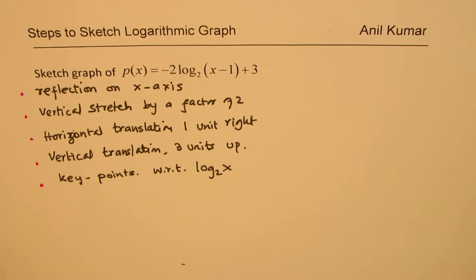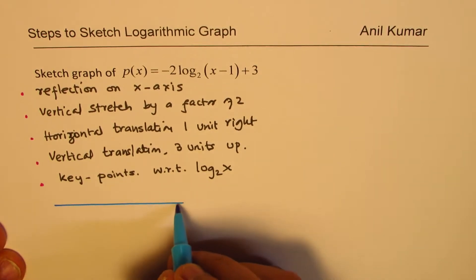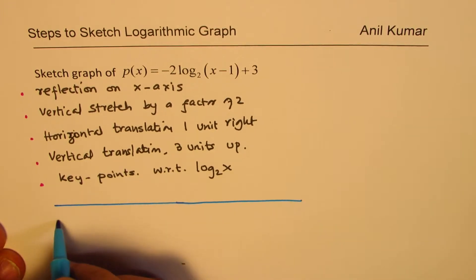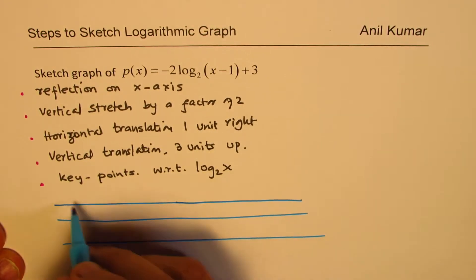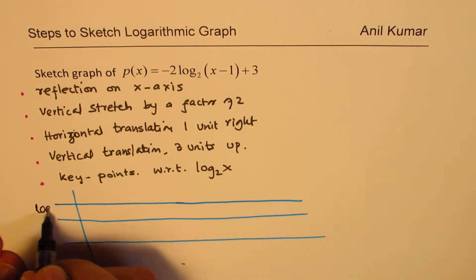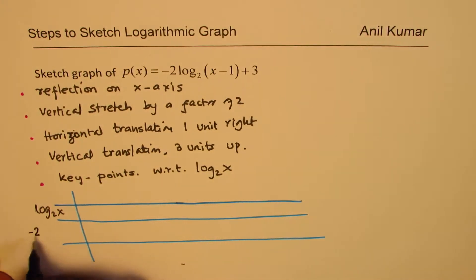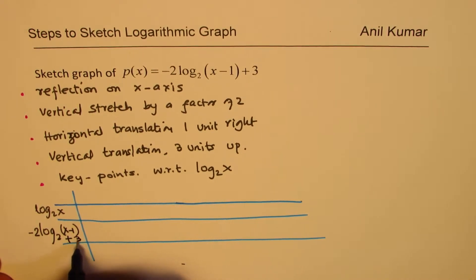So let me make a table here so that we can clearly list our points. Let me make a horizontal kind of a table this time since we have less space. So let's say we'll write down log to the base 2 of x and then we'll write this function which is minus 2 log to the base 2 of x minus 1 plus 3.